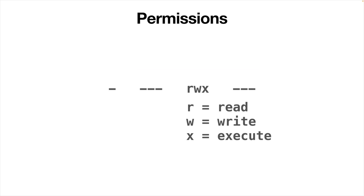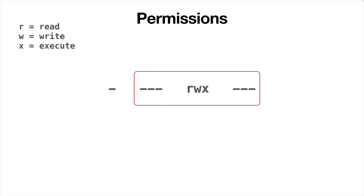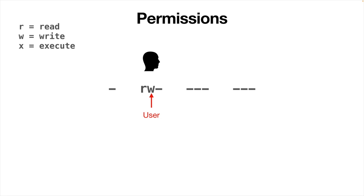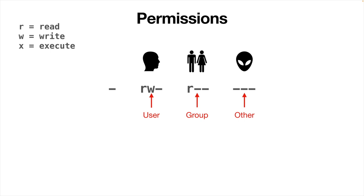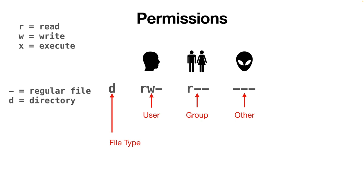These columns are basically divided into three elements. The first column is for the user — in this case the user has read and write permissions. Then the group has read permissions, and then everybody else has no permissions at all. This shows you who can have access to this file and what kind of access it provides for different users. Finally we have the file type: a dash means it is a regular file, a D means it is a directory, and an L means it's a link.